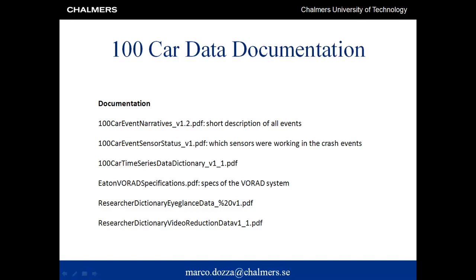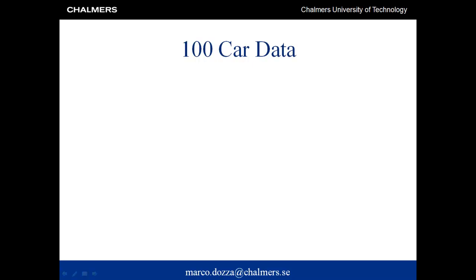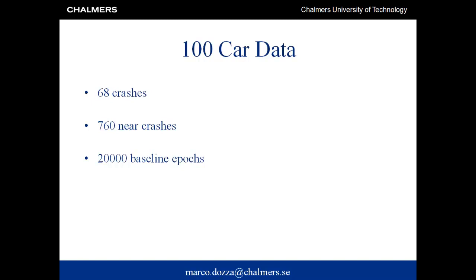Public data from the 100 Car Study includes 68 crash events, 760 near-crash events, and about 20,000 random epochs of baseline. However, the original data usability is limited by the data being divided into so many different and heterogeneous file types.